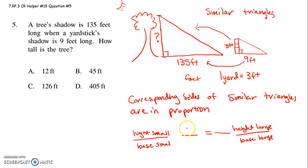So I'm saying here the height of my small triangle is 3 feet. The base is 9 feet. The base of my large triangle is 135 feet. So I'm like, ooh, how do I get from 9 to 135? Because that's what I better multiply 3 by to get to the height of my tree.